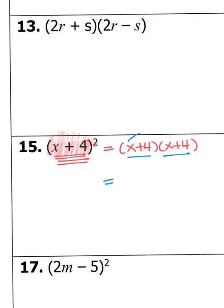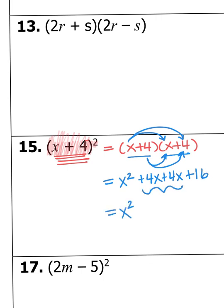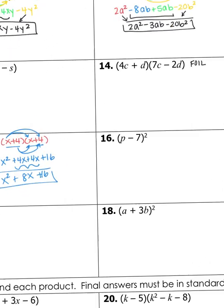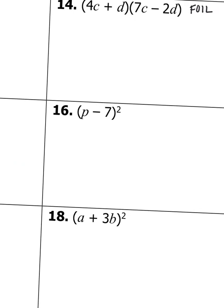Now we multiply: X times X is X squared. X times 4 is 4X. Inside: 4 times X is 4X. Last: 4 times 4 makes 16. Combine the middle: 4X and 4X makes 8X. So the answer is X squared plus 8X plus 16. Go ahead and try number 16 — first rewrite it, then multiply.